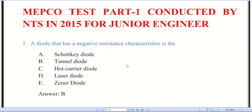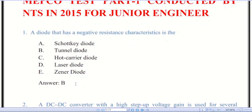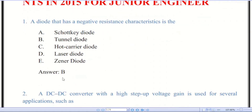The first question: a diode that has negative resistance characteristics. There are five options. The correct answer is B — the tunnel diode. A tunnel diode is a type of semiconductor diode that has effectively negative resistance due to the quantum mechanical effect called tunneling.